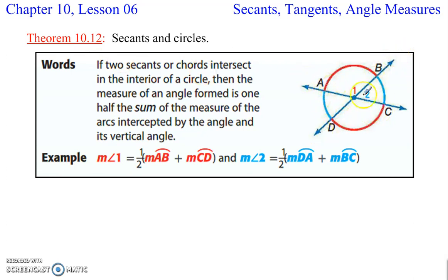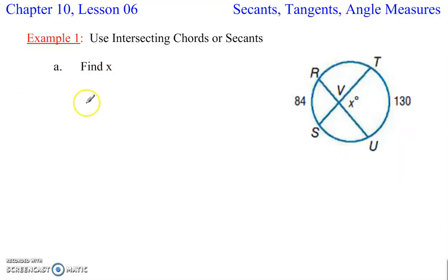If two secants intersect inside a circle, the angle measure is the average of the intersected arcs. So I'll add those two together and divide by 2. Or I could say it's half the sum of the intercepted arcs. We could use that, here we go.